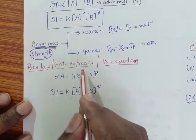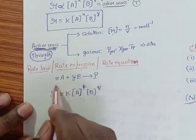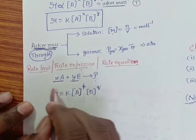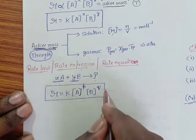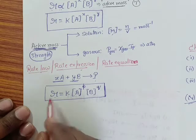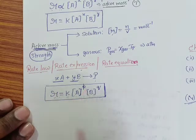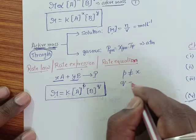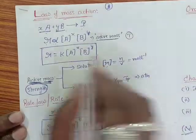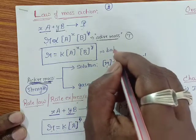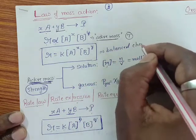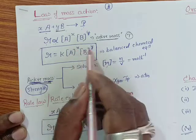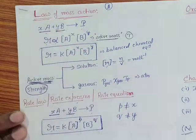Next, coming to rate law, rate expression, or rate equation. Consider a reaction in which x moles of A combines with y moles of B to form products. We know that the speed of the reaction depends upon the active mass of the reactant molecules. Therefore, the rate expression can be written as R = K[A]^P[B]^Q, where P may or may not equal X and Q may or may not equal Y. Here, I represent the rate expression based on the balanced chemical equation, because the powers are the coefficients as indicated in the stoichiometric equation.